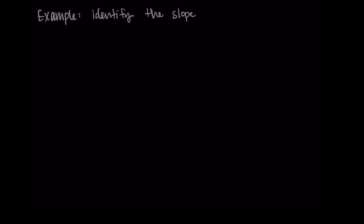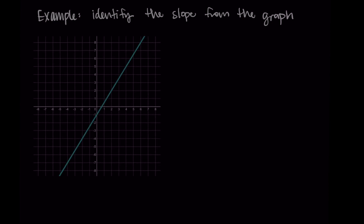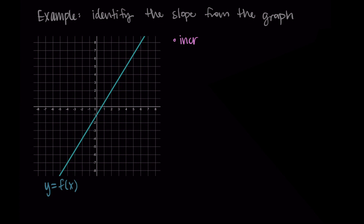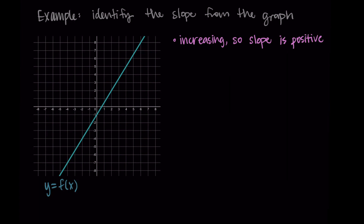Let's get into our first example — identifying the slope from a graph. Here is our linear function; let's say it's y equals f(x). I'm noticing a few things. First, I see that this function is increasing — we're always going uphill as we move from left to right. This means that our slope is going to be positive. Increasing as a line means we have a positive rate of change.